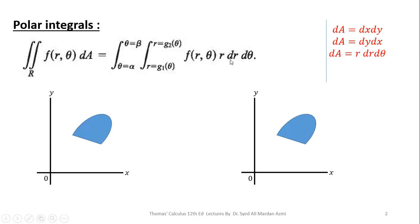Since r is our inner variable, the limits of r may be constant or variable. The limits of r are taken as g1(theta) for the lower limit and g2(theta) for the upper limit. Theta is our outer variable, so the limits of theta are always constant, and they are expressed in radian measure of angle in the counterclockwise direction.